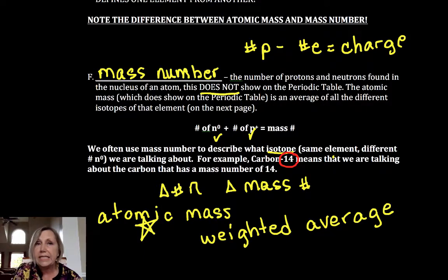If I write the word carbon, I know that my number of protons is six. It's common to put a hyphen and a 14, and that tells you the mass number. Then by subtraction you can find out that your number of neutrons has to be equal to eight.